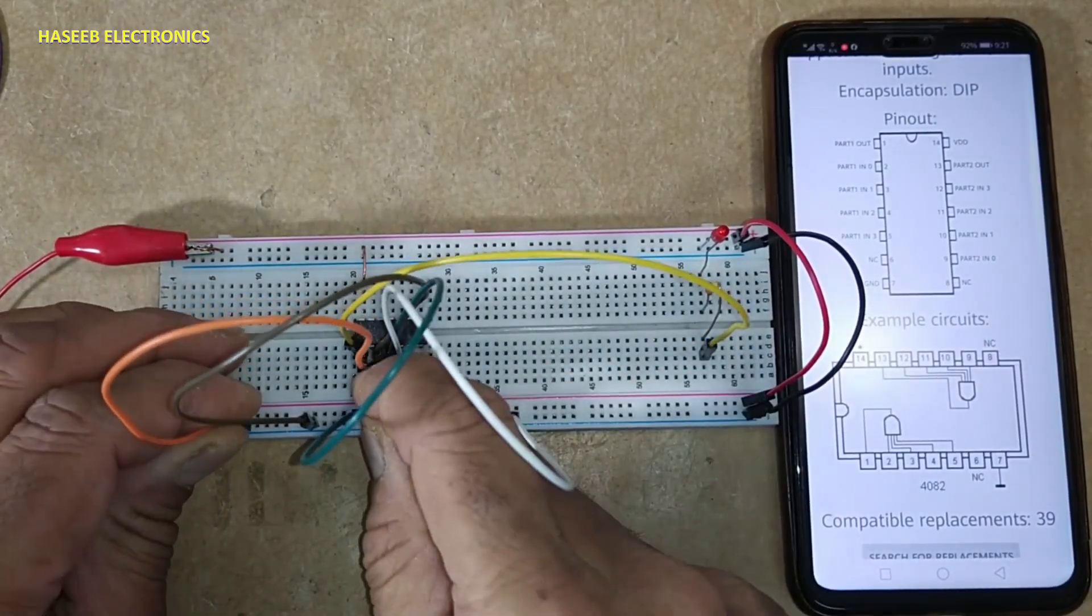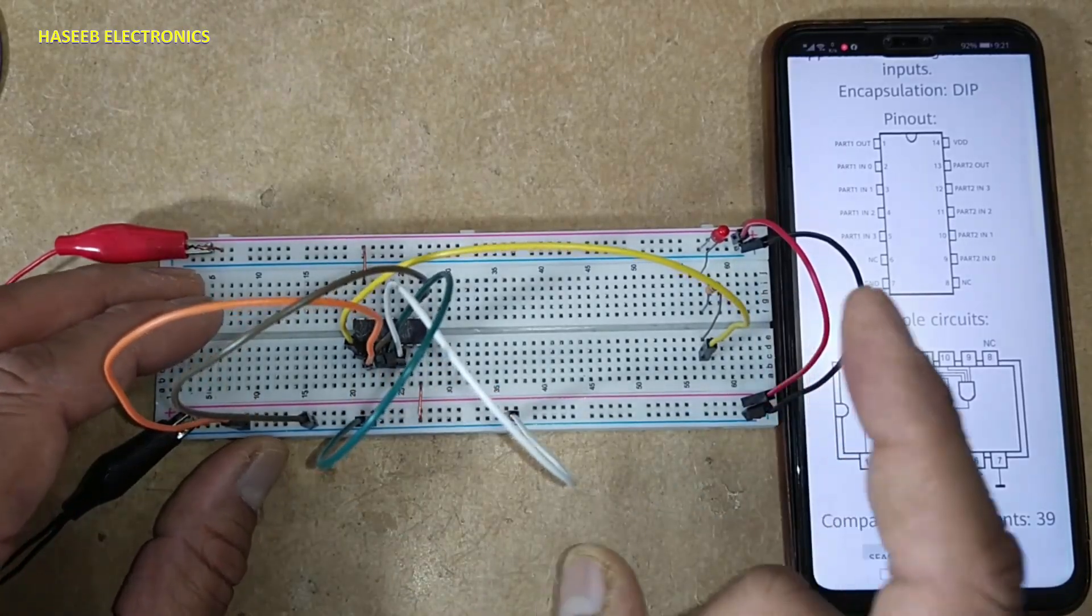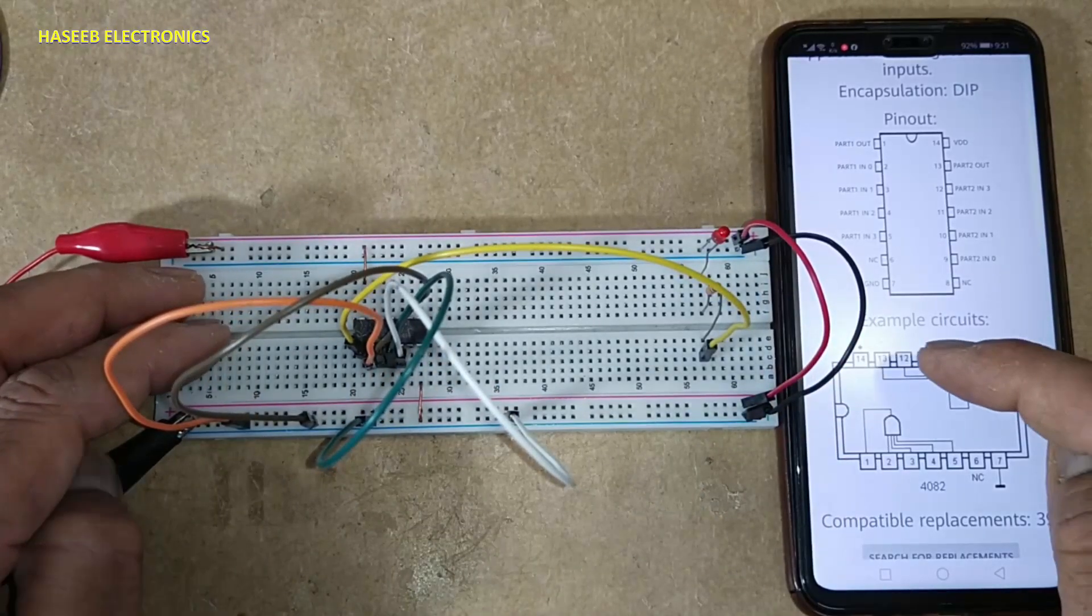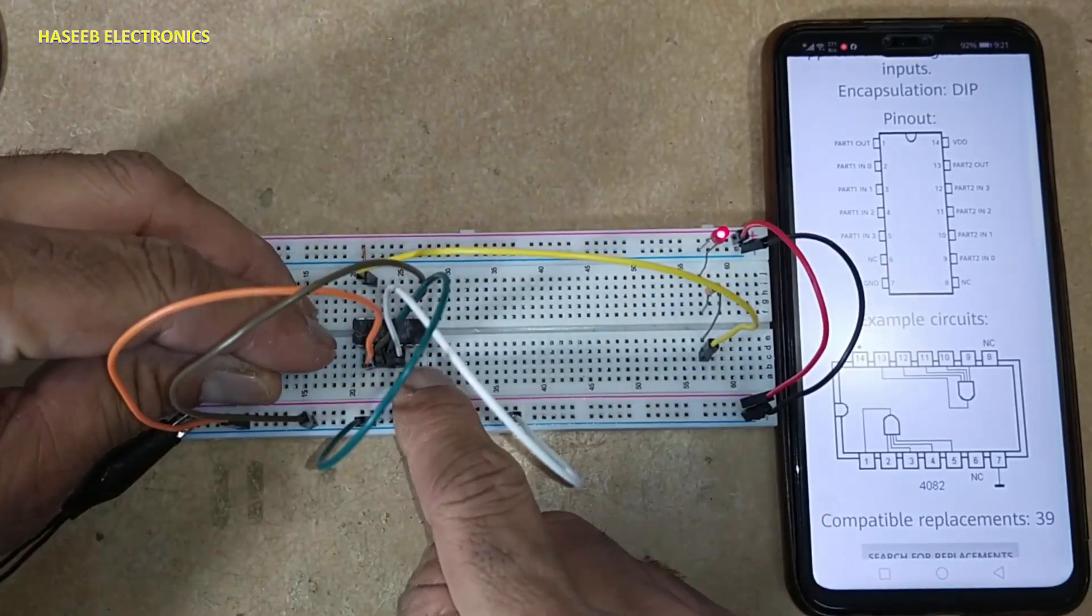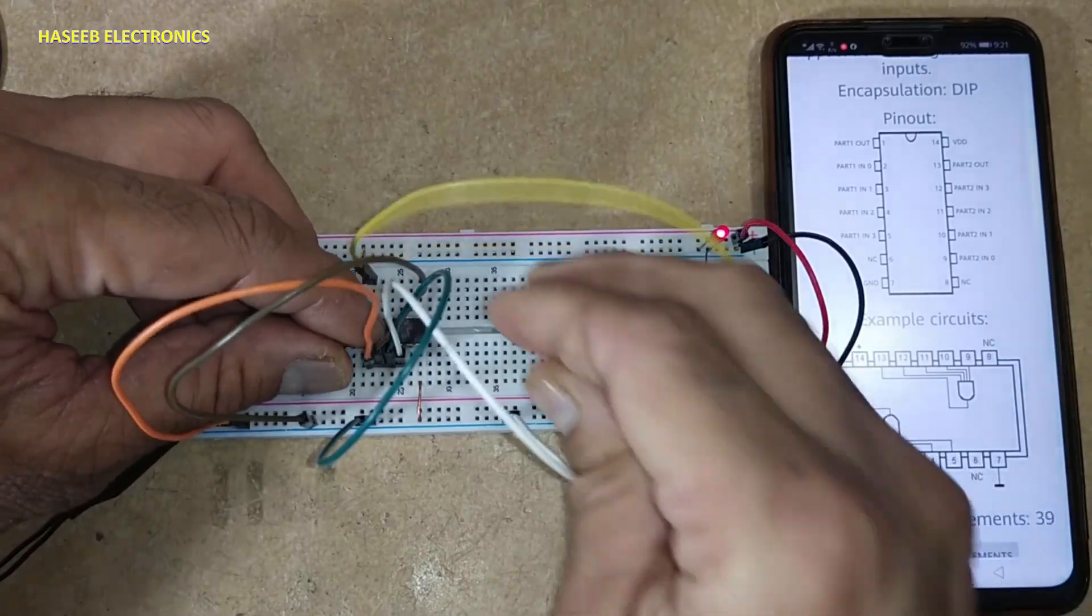Second side gate, pin number 13 is output, pin number six. In this side not connected. Second side pin number eight not connected.